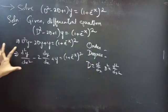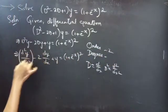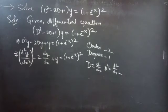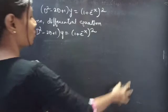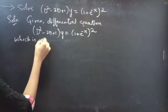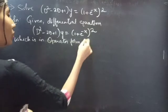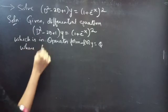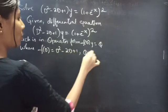Identify the highest derivative: d²y/dx² is the highest derivative, so our order is 2, and the highest power of the highest derivative gives the degree, which is 1. We are given the differential equation in operator form f(D)·y = Q, where f(D) = D² - 2D + 1 and Q = (1 + e^(-x))².